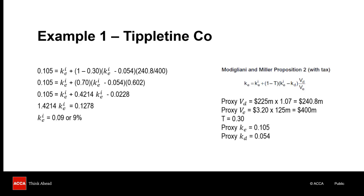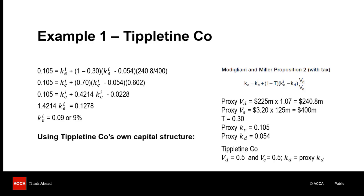In other questions, it is possible you will be asked to estimate a geared cost of equity. When that happens, you will be provided with additional information about the company's own capital structure and its cost of debt. For the purposes of this example, let's say Tipleton Co's debt equity ratio is 50-50 based on market values. To keep things simple, let's assume Tipleton Co's pre-tax cost of debt is the same as the proxy company's cost of debt, i.e. 5.4%.